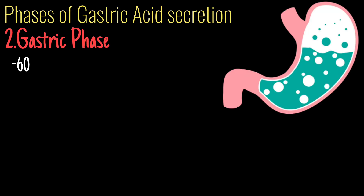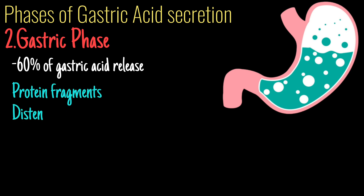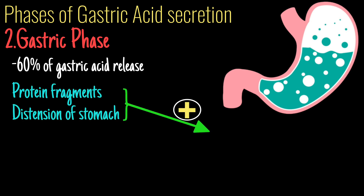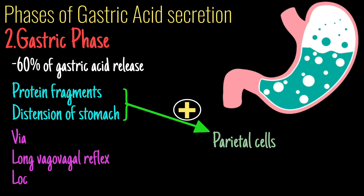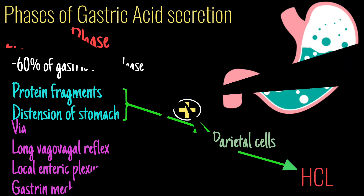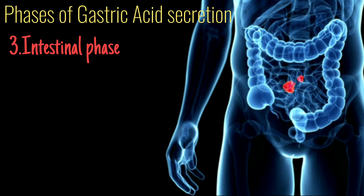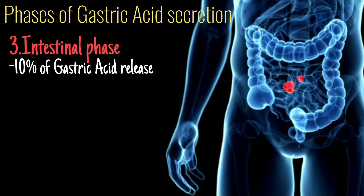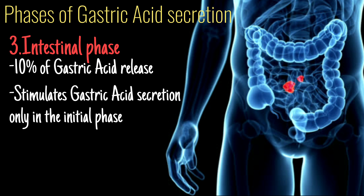The gastric phase accounts for 60% of gastric acid release. After food enters the stomach, protein fragments, distension, and other stimuli activate the parietal cells via long vagal reflexes, local enteric plexuses, or gastric mechanisms to produce hydrochloric acid. The final phase is the intestinal phase, accounting for only 10%; it stimulates gastric acid secretion only in the initial phase but later inhibits acid release.